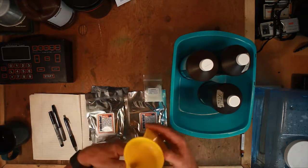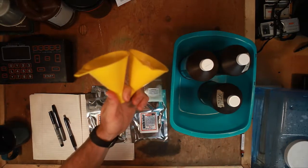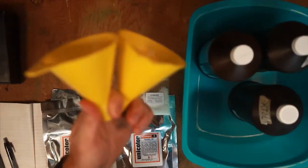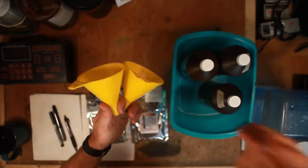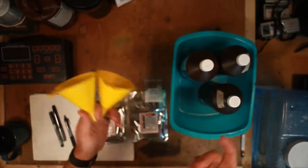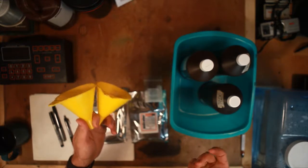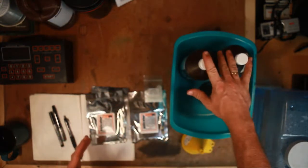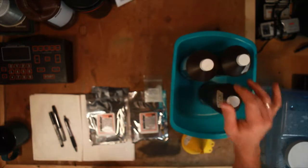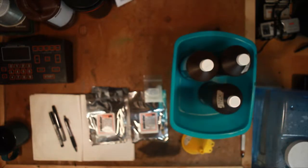We'll have a separate set of funnels for our color chemistry to keep separate from our black and white chemistry and we'll make sure to keep those labeled so we don't cross contaminate. I'm going to get this mixed up and ready and then we'll cut back to getting ready to develop our film.